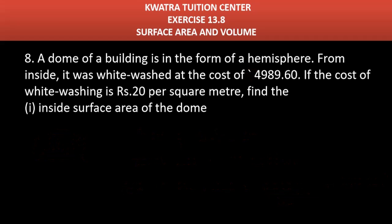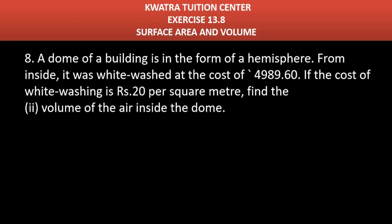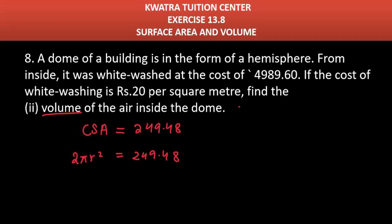Now moving to the second part — we have to find the volume of air inside the dome. The CSA of the dome equals 2πR², which is 249.48. We need to find R first, and then use the volume formula for a hemisphere: (2/3)πR³.